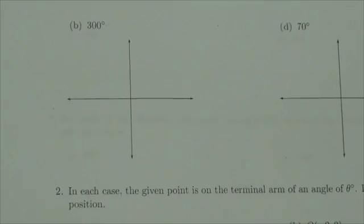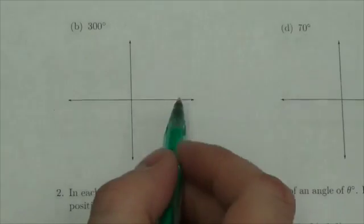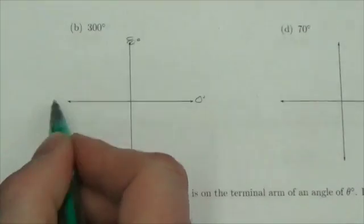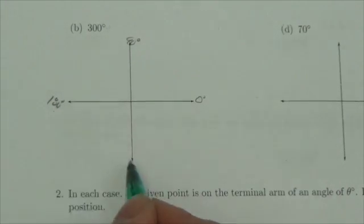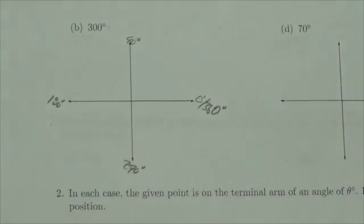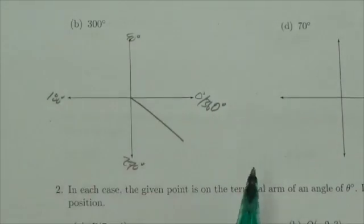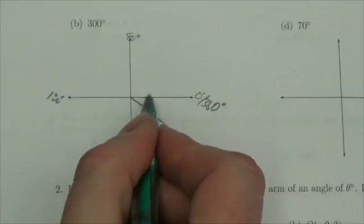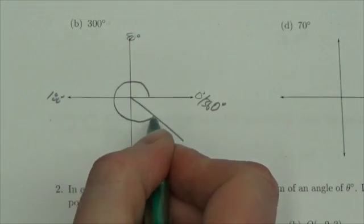For B, 300°, again knowing that this is 0°, 90°, 180°, 270° out to 360°, that means my terminal arm here for that angle would have to be somewhere in the fourth quadrant. You already know it's going to be the fourth quadrant.